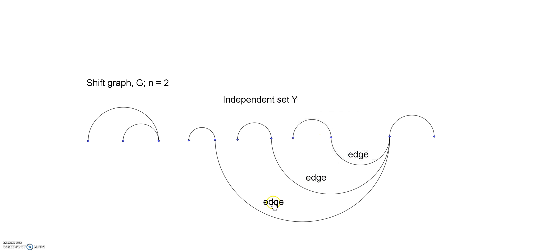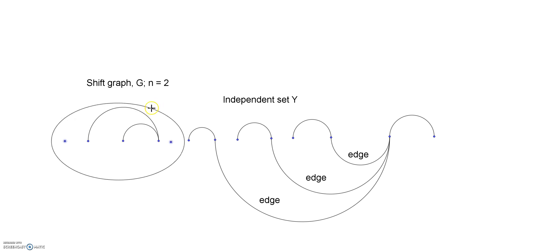And so in our project, this was the most difficult part. Because when Dr. Trotter explained shift graphs, there was no relation to the Mycielski construction other than that it had some sort of relationship between the increase of vertex size and the chromatic number. But what we're really saying is, if I draw an ellipse around this original graph — this ellipse I just drew — this is the original shift graph. This is n equals 2.